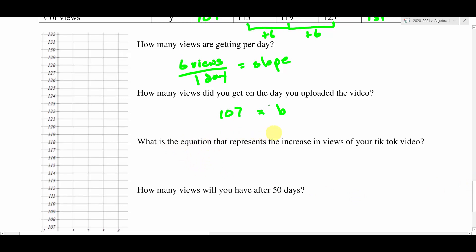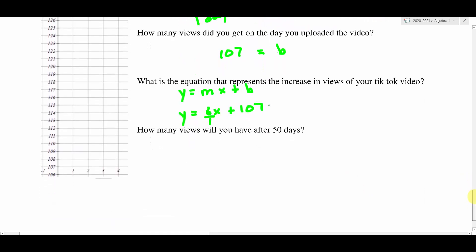So let's go ahead and write our equation. It says, what is the equation that represents the increase in views of your TikTok video? And what I like to do is I like to start by writing the blueprint for my line, y equals mx plus b, and then I fill in the blanks, m and b. So m is six. So I'm going to say six x, or if you want, you can put six over one. It doesn't matter. And then plus b, b being 107. There's my equation. Really that simple. You just have to find those two pieces of information. However they give it to you, whether they give it to you in a table or with a verbal description of those two pieces of information, you've got to find the slope and the y-intercept.